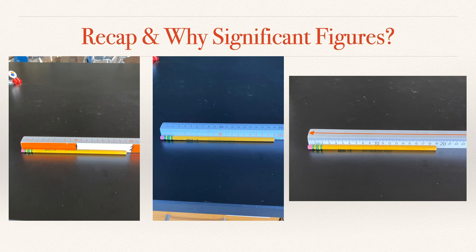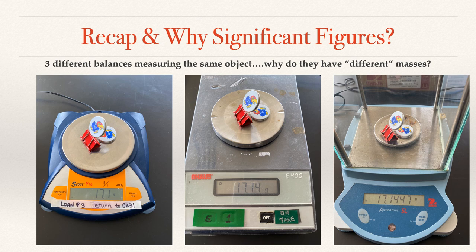So just to recap, this activity and why we are going to be talking about significant figures, different measuring devices have different degrees of accuracy. We see that in the meter sticks. We see that in our balance. And so when we look at numbers, the numbers indicate to a scientist, the degree of accuracy of our measuring device.